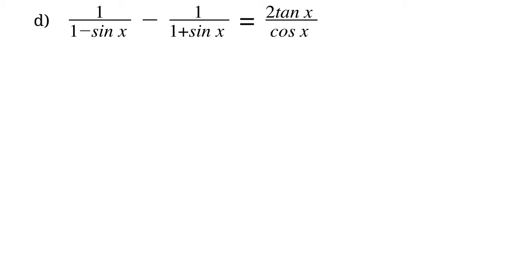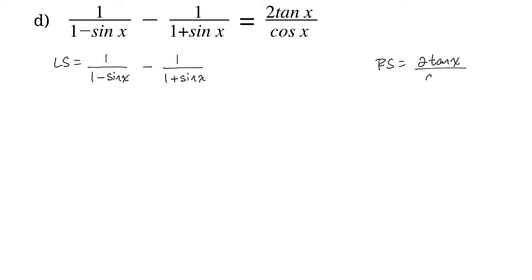This is the first identity that we're going to prove. We've got to separate our left side and our right side. On the left side we have 1 over 1 minus sine x, minus 1 over 1 plus sine x. On our right side we have 2 times tan x over cos x. The left side looks a little bit more complex so let's start with that. We have two fractions here — let's combine them.